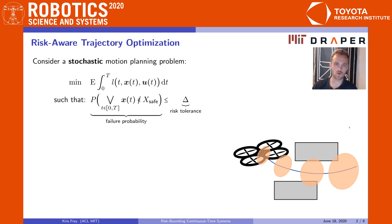Consider a stochastic motion planning problem in which we minimize some cost-functional in expectation under a safety constraint that the total probability of failure must lie below some risk tolerance. Here, failure refers to the event that the state leaves some predetermined safe set, X_SAFE, at any point during execution. This formulation is quite general, applying to obstacle avoidance or any other state constraint, and it's a natural way to encode safety for noisy or partially observable autonomous systems.